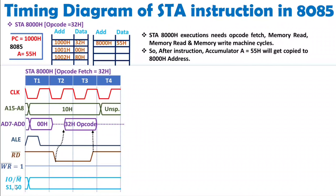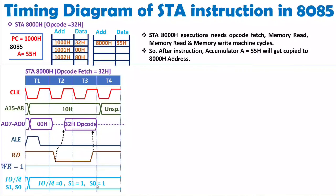IO/M̄ should be 0 because this is a memory operation — we are reading memory during opcode fetch. S1, S0 should be 1, 1 for opcode fetch. So IO/M̄ is 0 and S1, S0 is 1, 1.